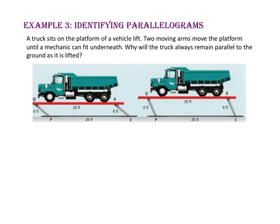In example 3, we will identify parallelograms. A truck sits on a platform of a vehicle lift. Two moving arms move the platform until a mechanic can fit underneath. Why will the truck always remain parallel to the ground as it is lifted? Even though the angles formed by the arms change as the truck is lifted, the length of segment QR and segment PS remain the same — both 26 feet long — and the arms are both 6 feet long. Since both pairs of opposite sides are congruent, we have a parallelogram. In a parallelogram, both pairs of opposite sides are parallel, so segment QR and segment PS will always be parallel to each other.